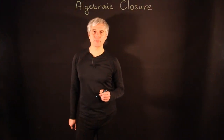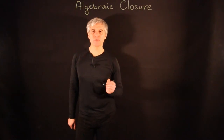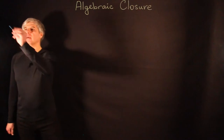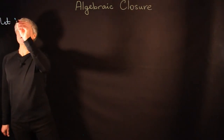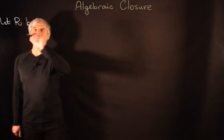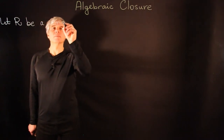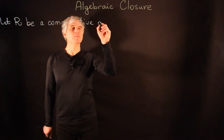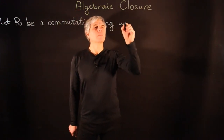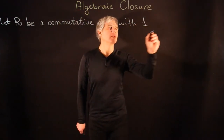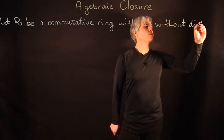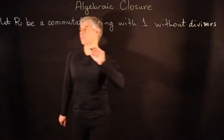Today we are going to discuss algebraically closed fields and the operation of algebraic closure. We will begin by discussing two constructions of fields. Let R be a commutative ring with 1 and without divisors of 0.